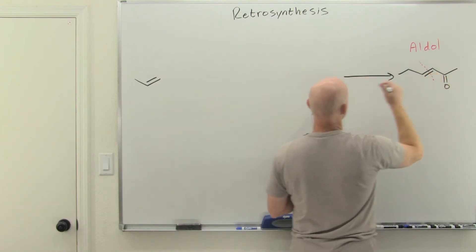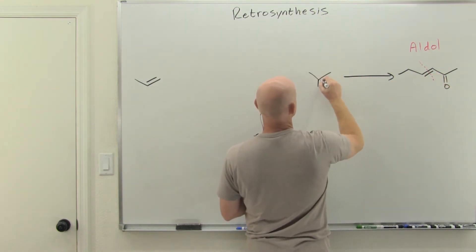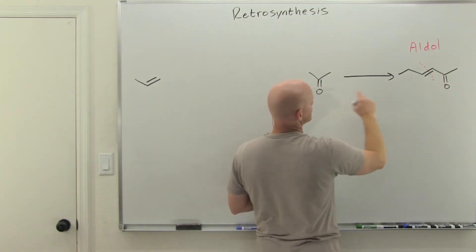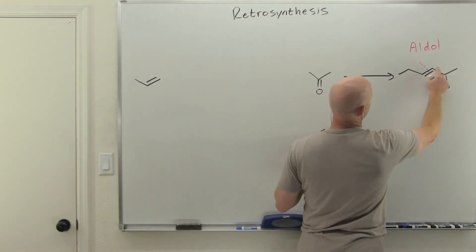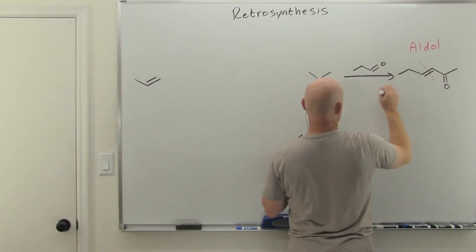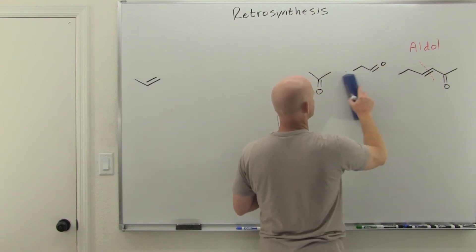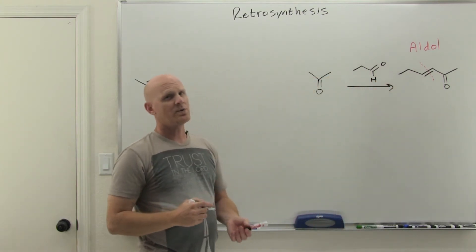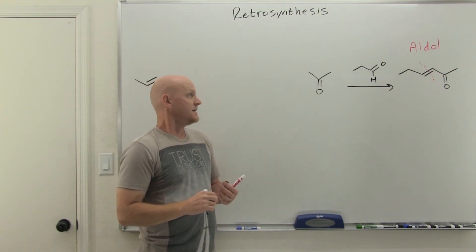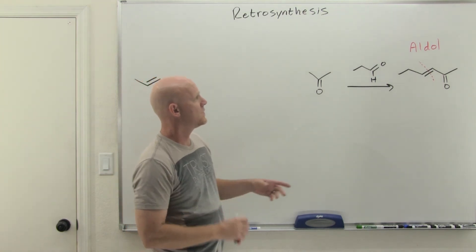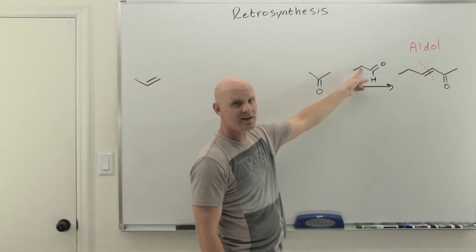You've got two perspectives you could start with. This side over here is going to be your nucleophile and form the enolate. This side over here used to have a double bond to oxygen.